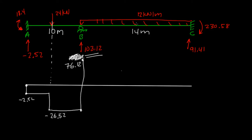And then we have this distributed load. So the 76.12 minus the 12 times 14 should give us negative 91.41. And then it goes back up to zero because of this reaction right here, this 91.41. All right.